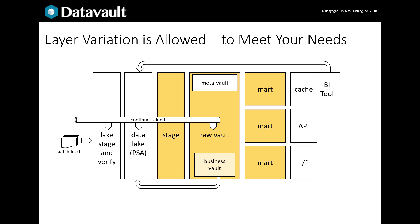We can now extend the raw vault. We can store metadata — data about the vault and data flows — for example data about quality metrics, volumes, data feed success rates and service levels. We can also store an error mart, which holds data that fails to load to the raw vault and can be investigated to find data quality problems or to diagnose bugs.